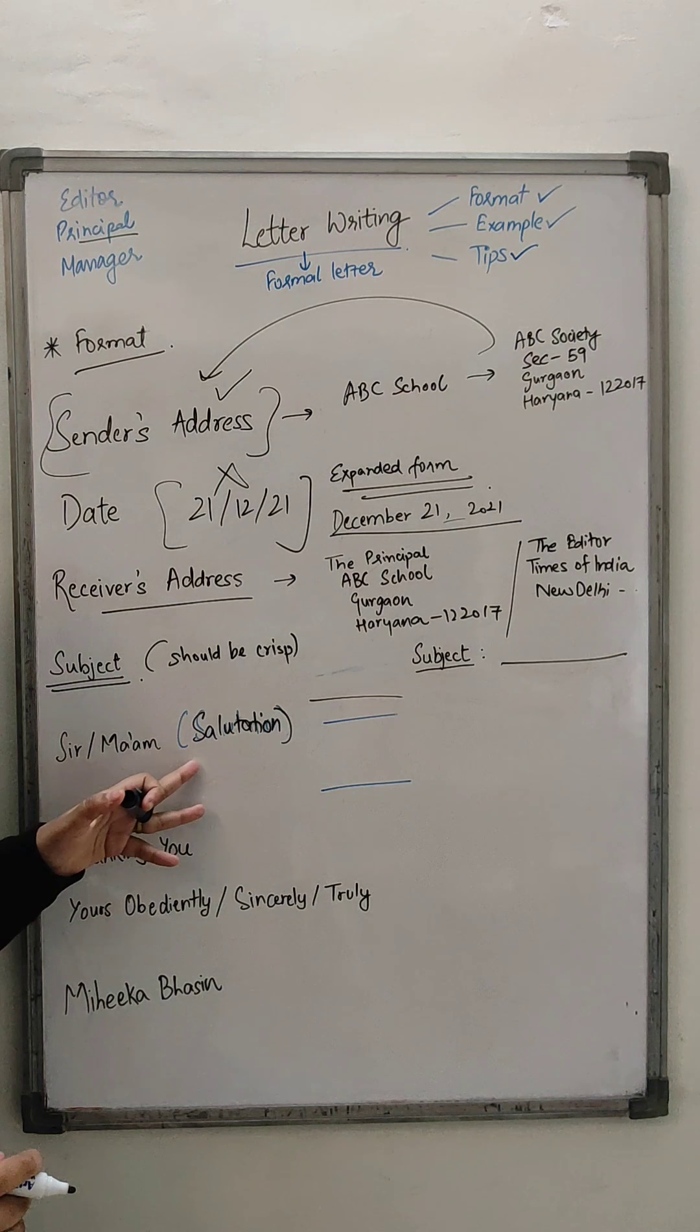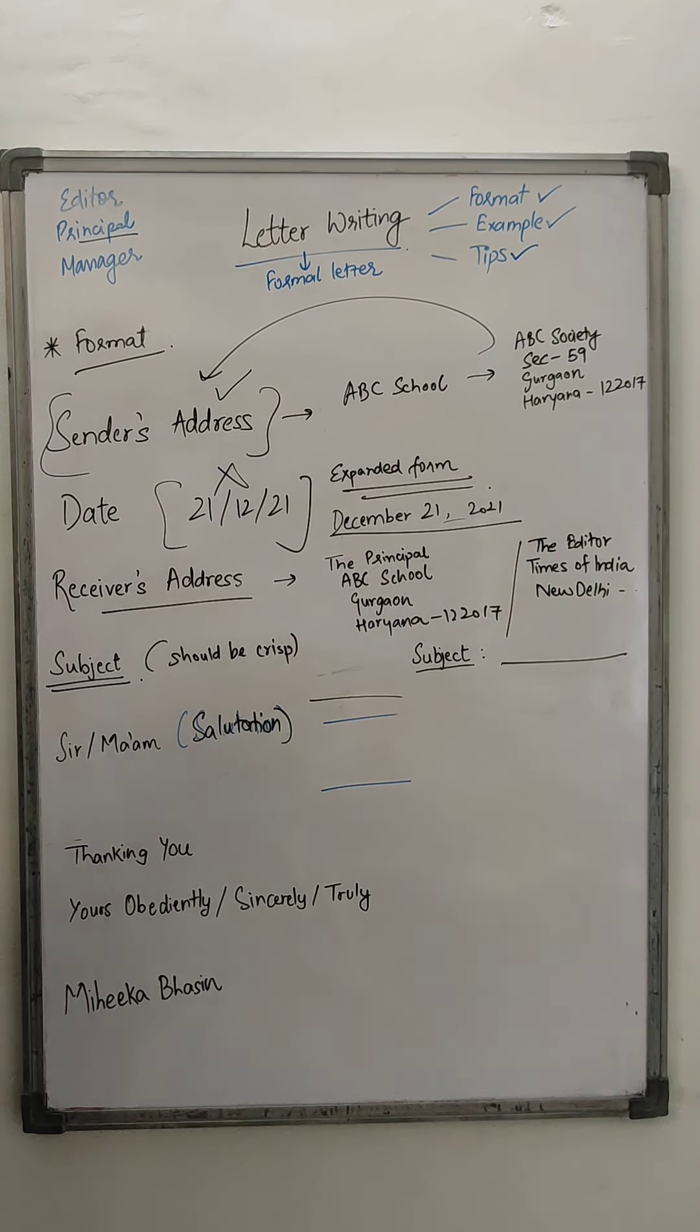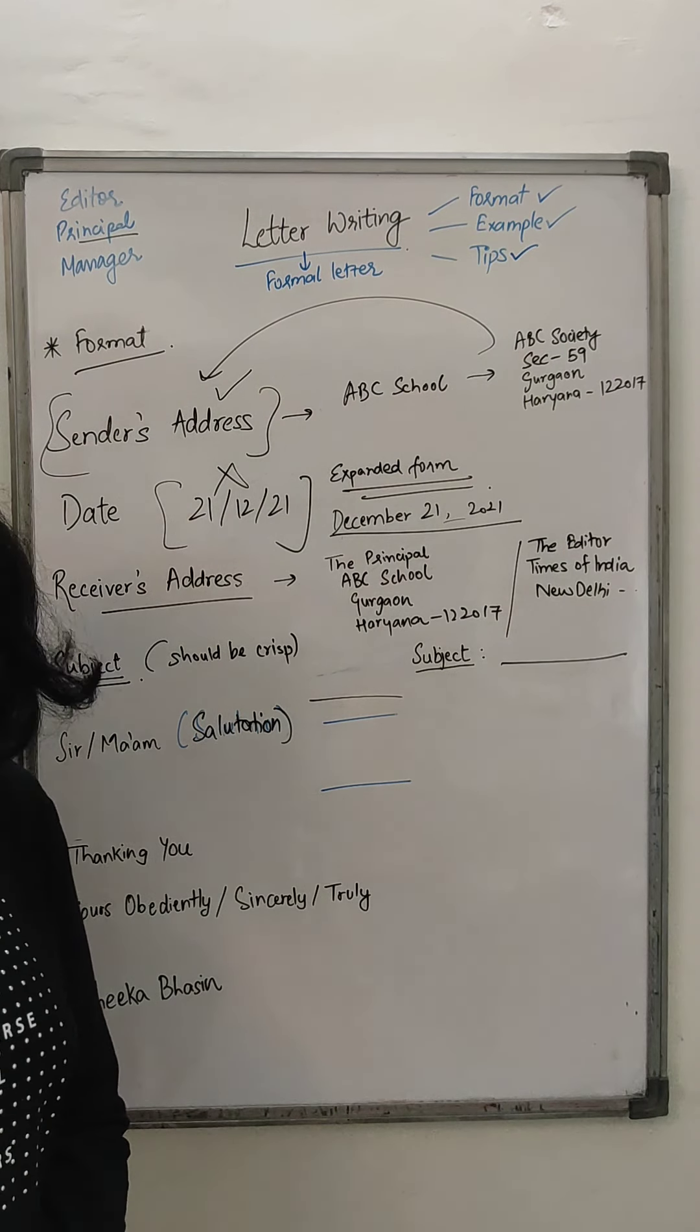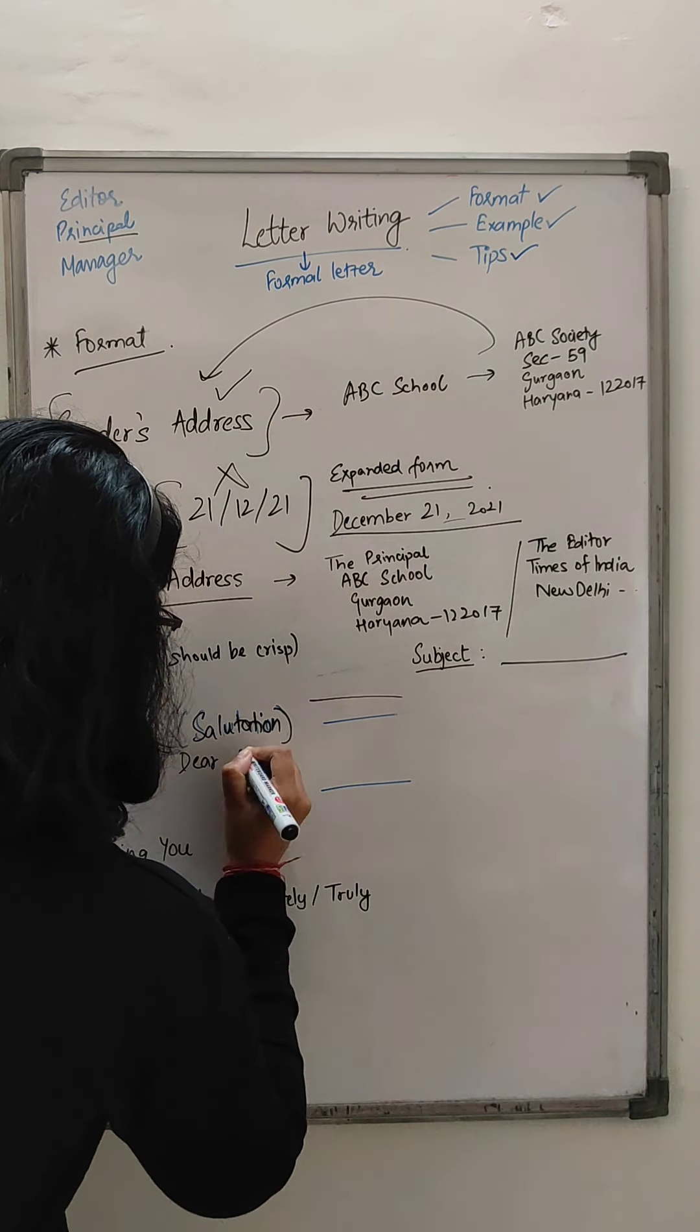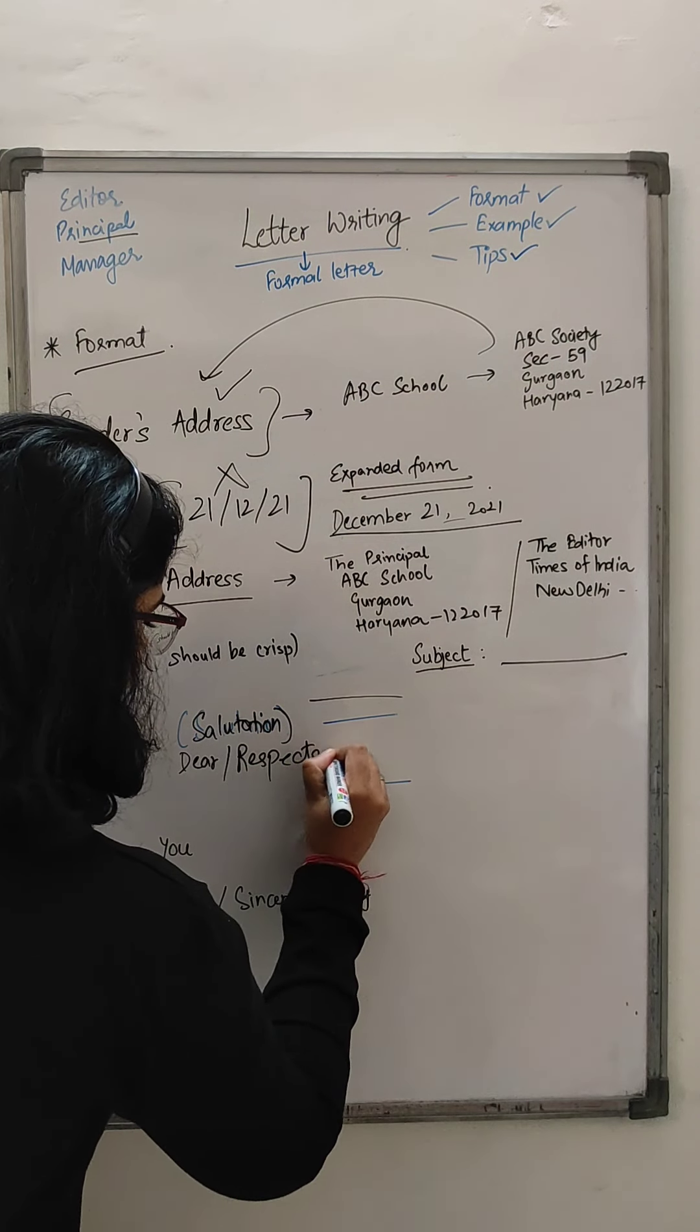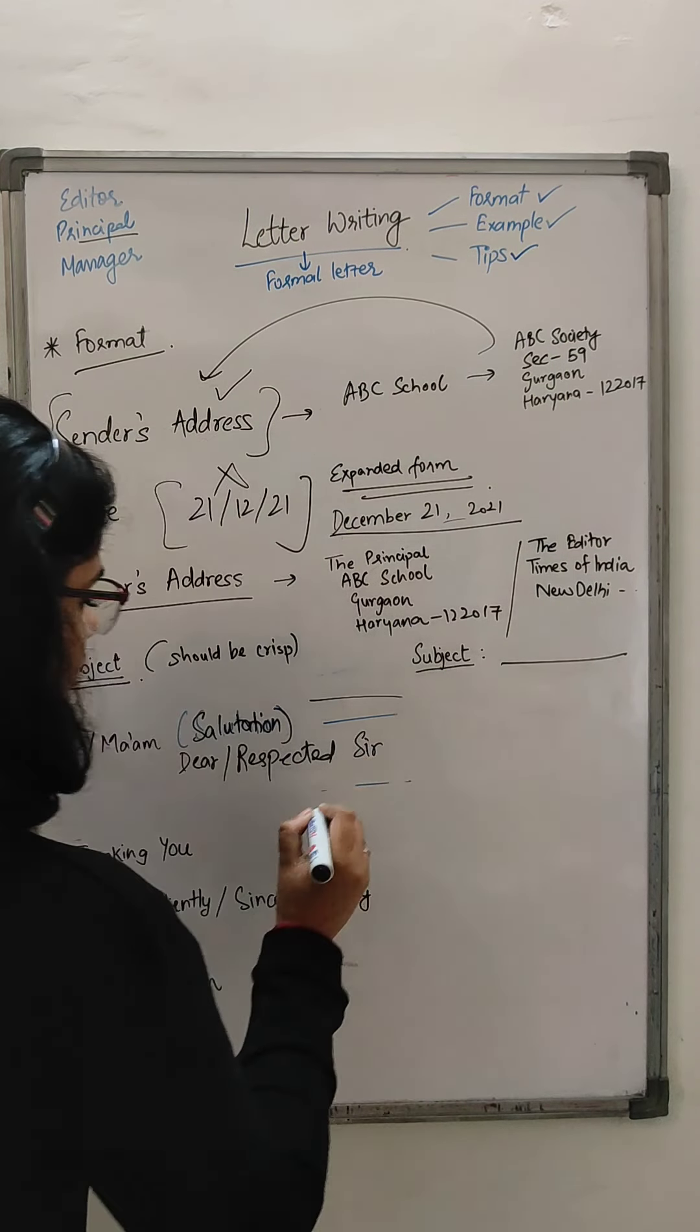After the subject, you have your salutation. Salutation is Sir or Ma'am. For example, if I'm writing to Principal Ma'am, I'm going to write Ma'am. For example, if I'm writing to an editor, say Mr. Sharma, just a fictional name, then I'm going to write Sir. Now, one more thing: you are not supposed to write Dear Sir or respected Sir. These are unacceptable. Earlier, many students used to write this, but this has been omitted from the format. And again, you're not supposed to put a comma like this. Like I said earlier, commas have been omitted, they have been obsolete from your letter.